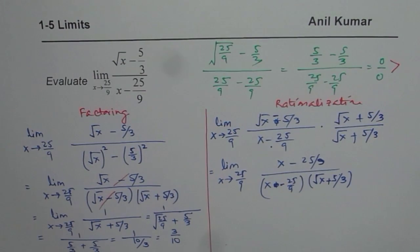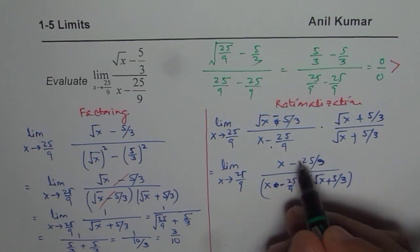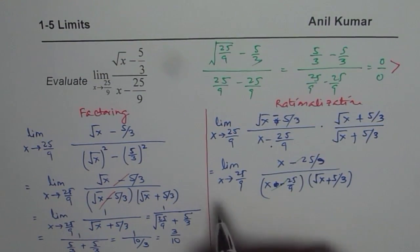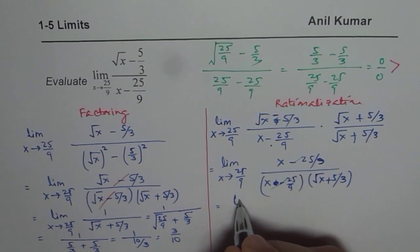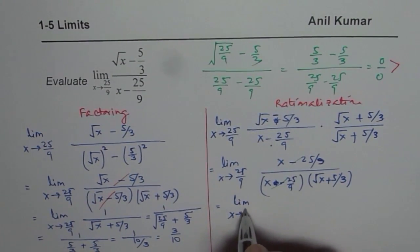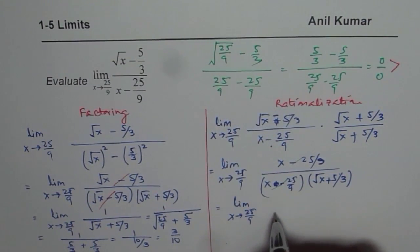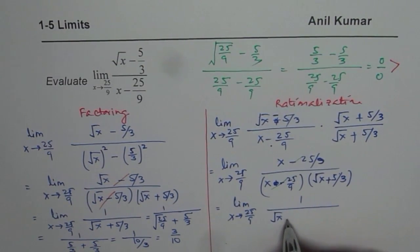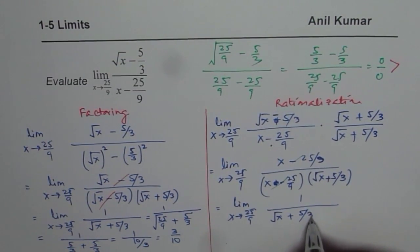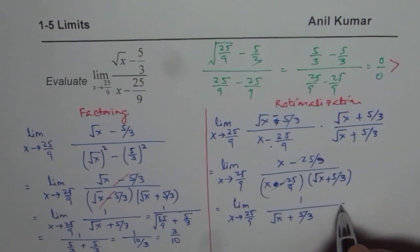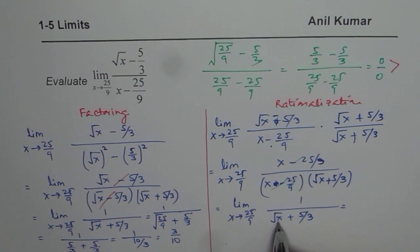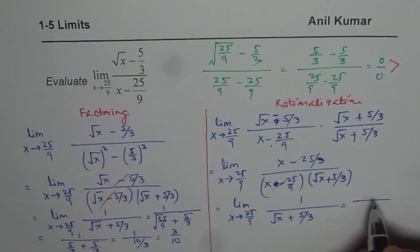Now one of these factors cancel out which is this factor and you are left with limit x approaches 25 over 9, 1 over square root of x plus 5 over 3, right?